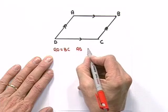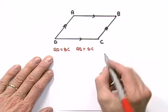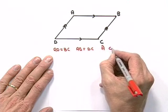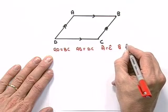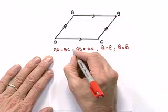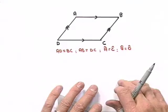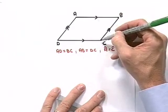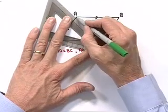What we proved last year using transformations is that the opposite sides AD and BC are equal to each other, and we also proved that the opposite sides AB and DC are equal to each other. Similarly, we proved that the opposite angles A and C are equal, and B and D are equal. Our challenge is to see if we can prove exactly the same thing using congruence.